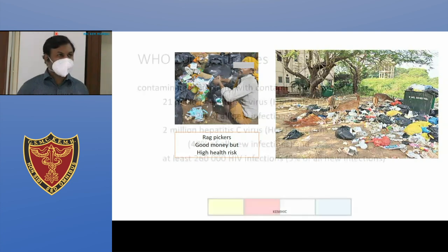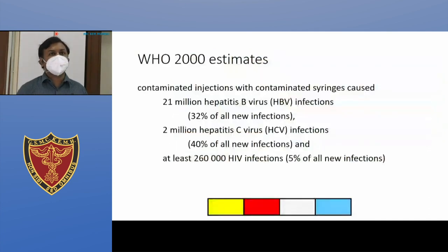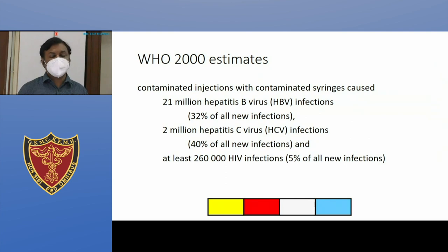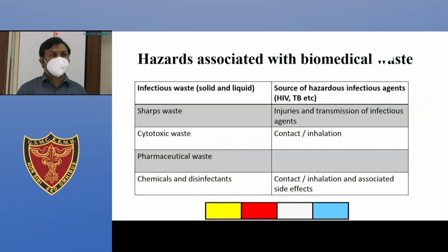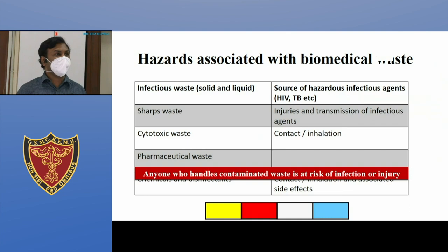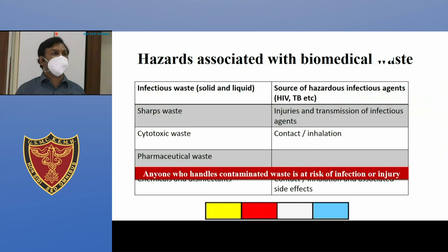The main bloodborne pathogens to be aware of are hepatitis B virus, hepatitis C virus, and HIV. Those who have not taken the hepatitis B vaccine, please take it. Anyone who handles contaminated waste is at risk of infection or injury — whether a ward boy, doctor, nursing student, or anyone. If you are handling infectious waste, there is a possibility of getting injured or infected.